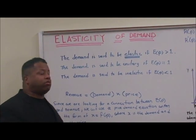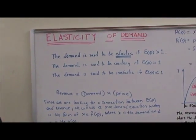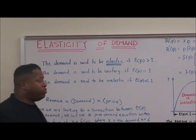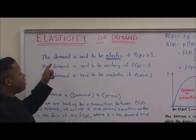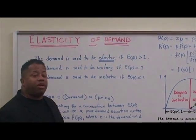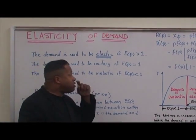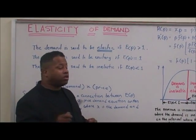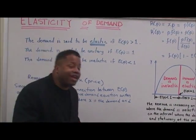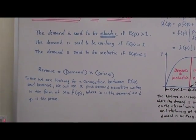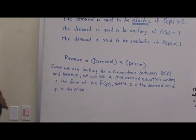Hello and welcome back to part two of elasticity of demand. We're going to be talking about some specifics with the terminology that economists like to use when dealing with the demand function. The demand is said to be elastic if E of P is greater than one, unitary if E of P is equal to one, and inelastic if E of P is less than one.